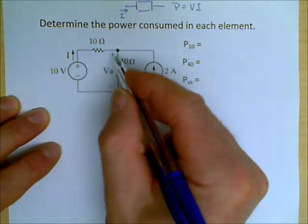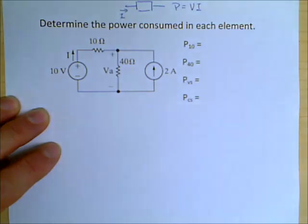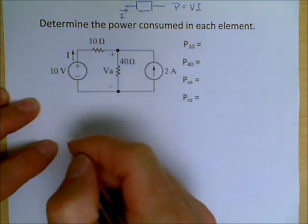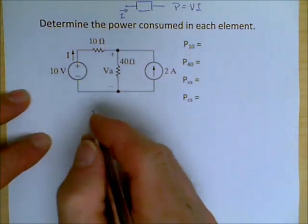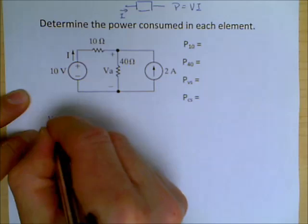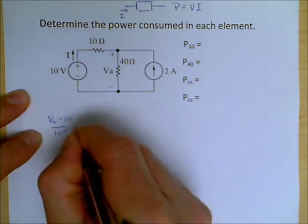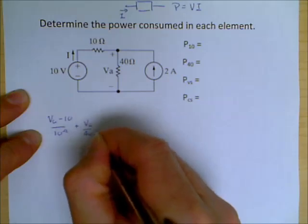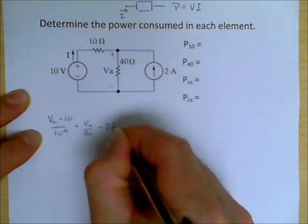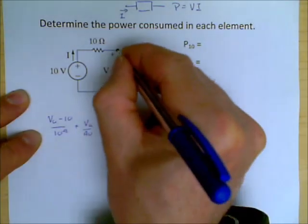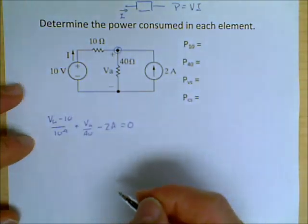We have a circuit. I'm going to call this VA. So that's a nodal reference establishment. So let's solve this by nodal analysis. So we have VA minus 10 over 10 ohms plus VA over 40 minus 2 amps is equal to zero. There's our KCL expression at the top node.